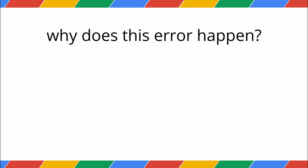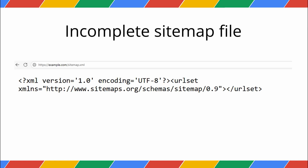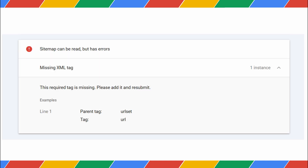Why does this error happen? Modern platforms like WordPress or Blogger are designed to be helpful — they automatically generate a sitemap file for you as soon as you set up your site. The problem is, they generate the container for the sitemap before you've put anything in it. A valid sitemap needs specific XML tags, most importantly the URL tag and the loc tag, which contains the actual address of a page on your site. When you submit a sitemap from a brand new website with zero published pages or posts, that sitemap file is empty. It's missing all of those required tags because there are no URLs to list yet. When Google tries to read this empty file, it sees the container is there, but none of the required content tags are inside, and it returns the missing XML tag error.